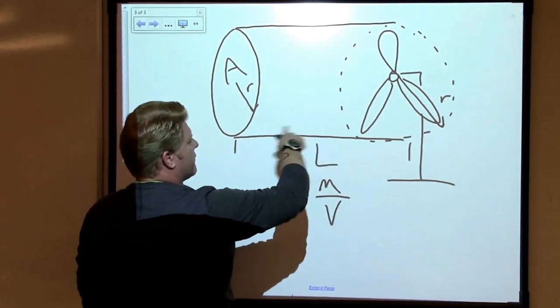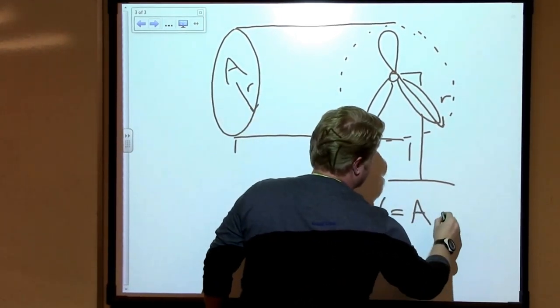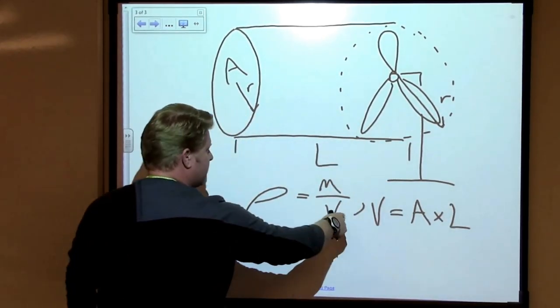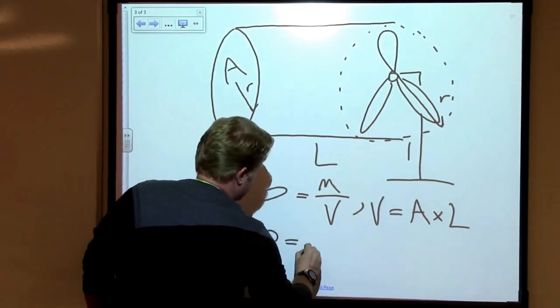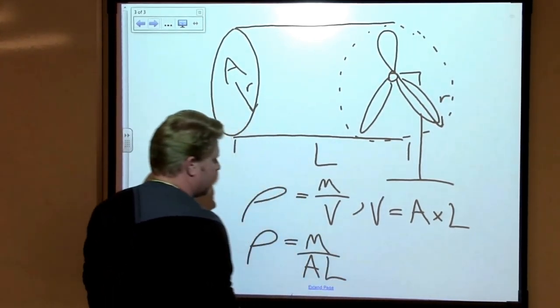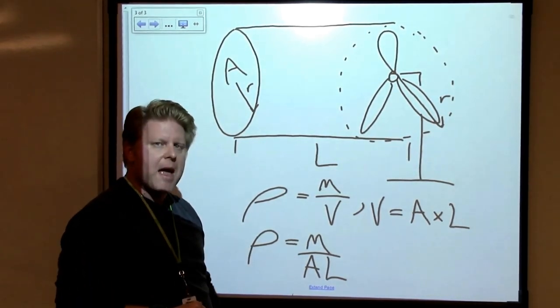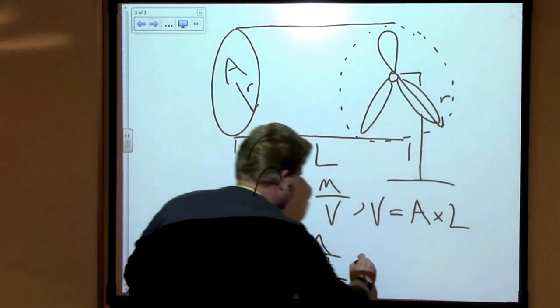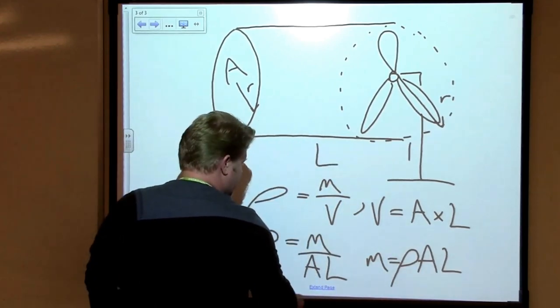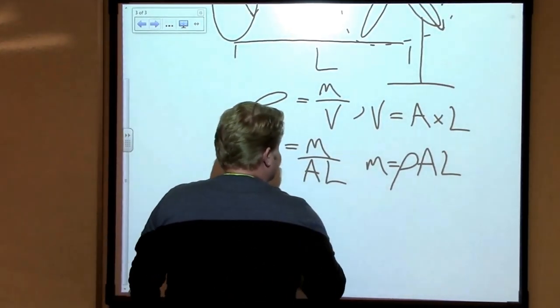If we look at the volume of this cylinder, we recognize that the volume is given by the area times the length. So we can plug that in, replace the volume for what the volume represents, and say that the mass is given by the area times the length. What I want to do is rework this so that I have mass by itself. That's no problem. We can just say mass equals the density times the area times the length.